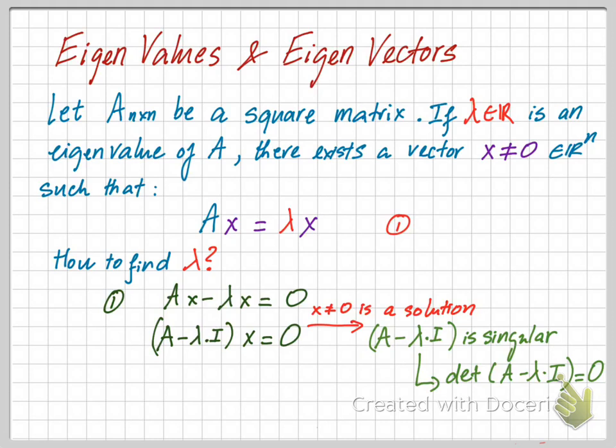We now know how to find lambda: by computing the determinant of A minus lambda·I, setting it equal to zero, and solving for lambda.